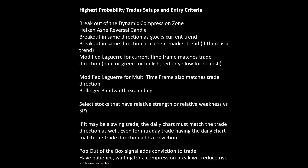We're looking for a breakout in the same direction as the stock's current trend — so if we're playing a compression zone breakout long, we want the stock to be bullish on the day. We try to trade in the same direction as the current market trend if there is one. We look for what's called a modified Laguerre gear for the current time frame — it's a momentum indicator, basically an oscillator with divergence stripped out. We also have a modified Laguerre gear for the multi-time frame, so we're looking for momentum on the current time frame and multi-time frames all going in the same direction.